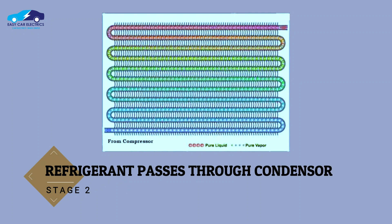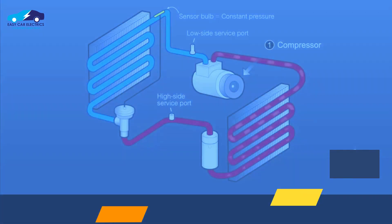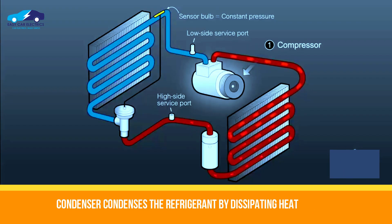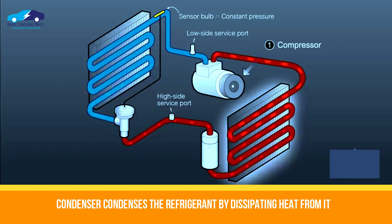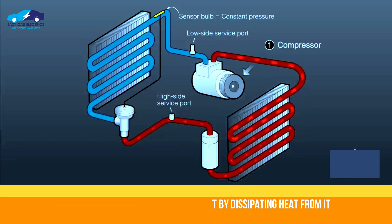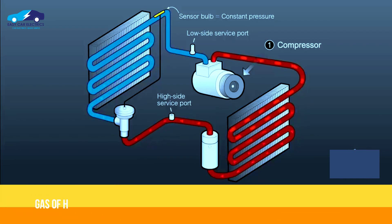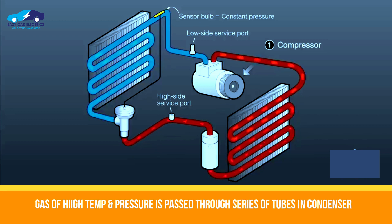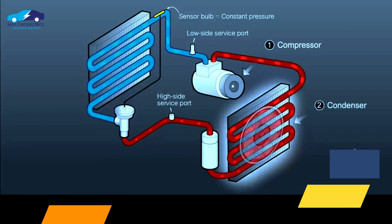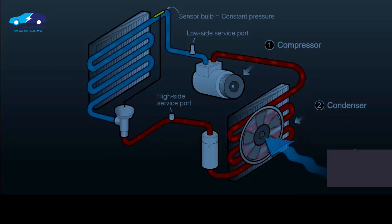Stage 2: Refrigerant passes through the condenser. The AC condenser acts as an essential component in the AC system, which condenses the vapor refrigerant into liquid refrigerant by dissipating heat from it. The high-pressure, high-temperature gas from the compressor is passed through a series of tubes in the condenser.